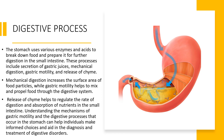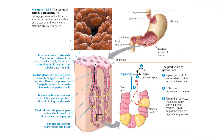Once the food is thoroughly mixed and broken down, it passes into the small intestine in small portions known as chyme. This helps to regulate the rate of digestion and absorption of nutrients in the small intestine. The stomach plays a crucial role in the digestive process by breaking down food into smaller particles and mixing it with digestive juices, preparing it for further digestion and absorption in the small intestine.